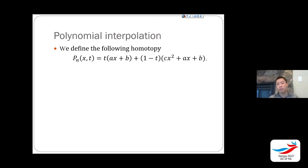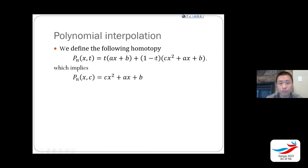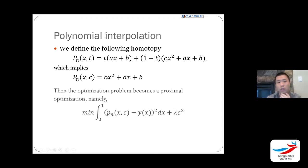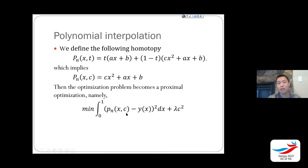For polynomial interpolation, going from linear to quadratic is equivalent to proximal optimization. When you simplify and only apply the homotopy with respect to C — first you put C=0 as a constraint, then you remove the constraint — you're optimizing A and B first, then updating C. This is essentially proximal optimization, a very popular optimization method.